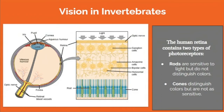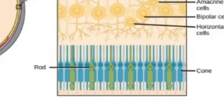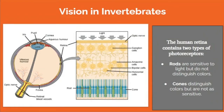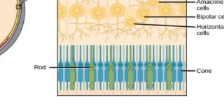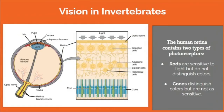The human retina contains two types of photoreceptors: rods and cones. Rods are sensitive to light but do not distinguish colors. Unlike rods, cones distinguish colors but are not as sensitive to light.